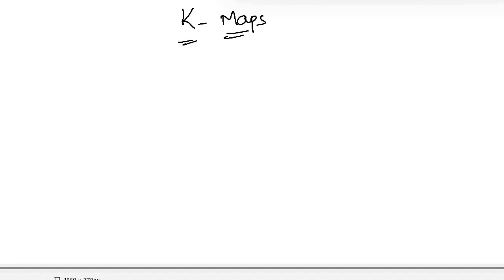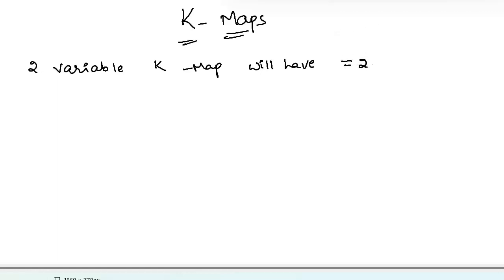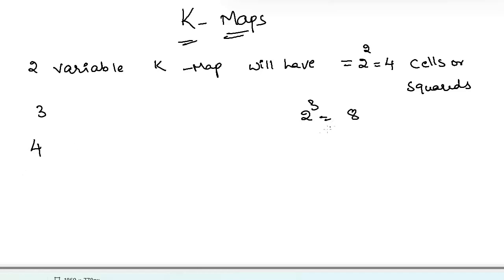An n-variable function has 2-power-n possible combinations. For example, a two-variable K-map will have 2² = 4 cells. A three-variable K-map has 2³ = 8 cells. A four-variable map has 2⁴ = 16 cells. A five-variable map has 2⁵ = 32 cells, and so on.